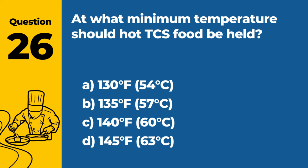Question 39: What are the requirements for a successful pest control program in a restaurant? A. Regular use of insecticides and rodenticides. B. Keeping doors and windows open for ventilation. C. Denying pests access to food, water, and shelter. D. Having a cat in the restaurant. Answer: C. Denying pests access to food, water, and shelter. A successful pest control program in a restaurant involves denying pests access to food, water, and shelter, and using preventive measures like sealing cracks and maintaining cleanliness.